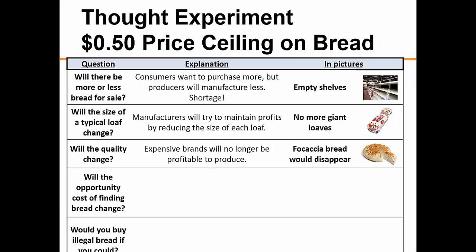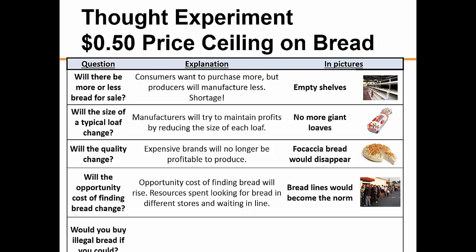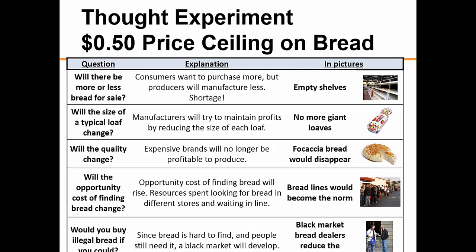However, there is much more to think about. What happens to the opportunity cost of finding bread? Since bread is harder to find, people who want bread will have to wait in line to get it. This increases the opportunity cost of getting bread. Also, black markets will develop to help supply meet demand. As a result, many of those who do not want to wait in line will resort to illegal means to obtain bread. Sellers will go underground, charge higher prices, and deliver the bread customers want without the hassle — much like alcoholic beverages under prohibition in the 1920s.